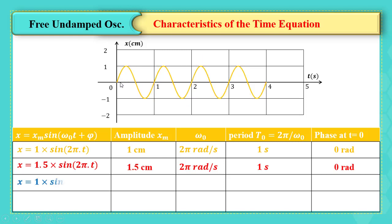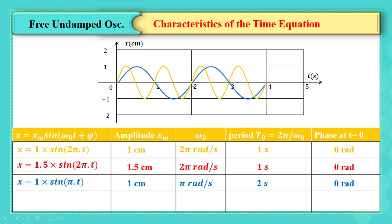If x = 1·sin(πt), the amplitude is 1 cm as the original, ω₀ is π, and the period is 2 seconds. The phase is still 0. The amplitude and initial value are the same, but the period doubled from 1 to 2 seconds, making the graph wider. The angular frequency became half, since what changes the angular frequency is a change in stiffness or mass, as ω₀ = √(k/m).